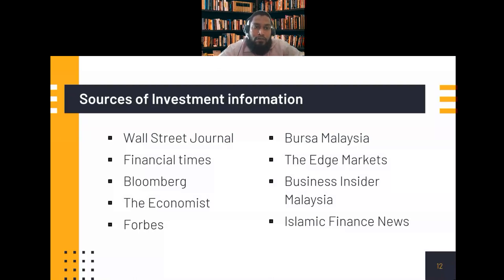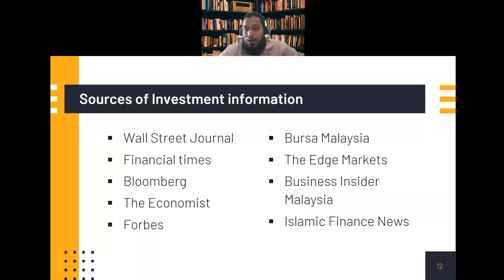There are numerous sources of information — many companies provide financial strength and other data on companies, though they may charge a fee. Sources include the Wall Street Journal, Financial Times, Bloomberg, The Economist, and Forbes. Related to Malaysia, Bursa Malaysia's website provides information on businesses and companies. The Edge Markets is very helpful for the latest business and corporate information in Malaysia. Business Insider Malaysia and Islamic Finance News provide updated information on Islamic finance, sukuk, and other instruments.